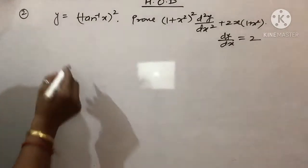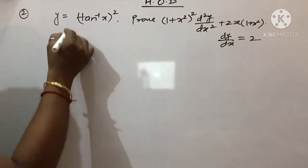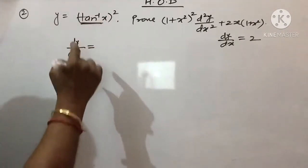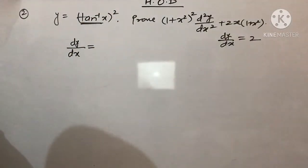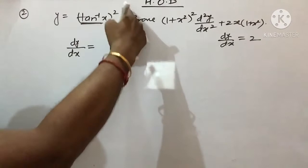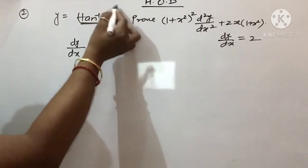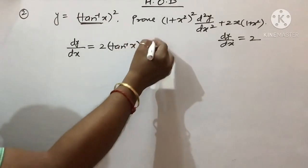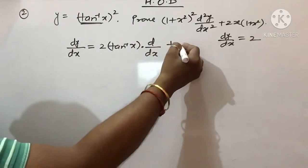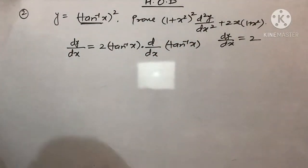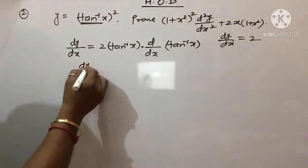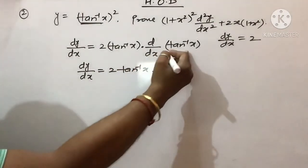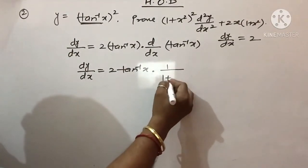Toh dhyan se dekhenge, main aapko pehla jo bhi tha wo bhi ek ek baar bata raha hoon. Jab main is function ko differentiate karunga, dy/dx — toh sabhi bachon ko malum hai ki this will act as x raised to power n. Toh jab hum x^n ko differentiate karte the toh differentiation tha: power ke constant upar. Toh jab main is power ko differentiate karunga it will be: 2·tan⁻¹x raised to power 1. Ab kiski d/dx aayegi: d/dx of tan⁻¹x. Tan inverse x ka differentiation: 1 upon (1 + x²).